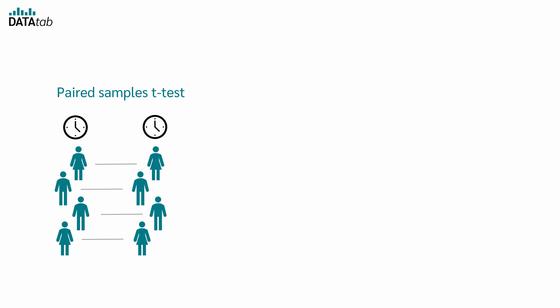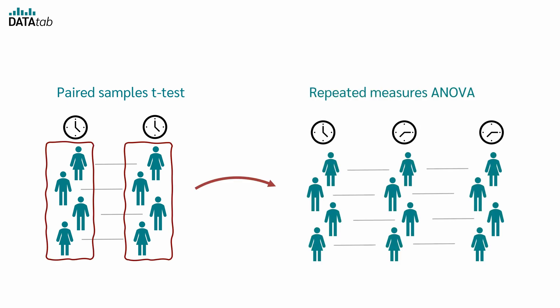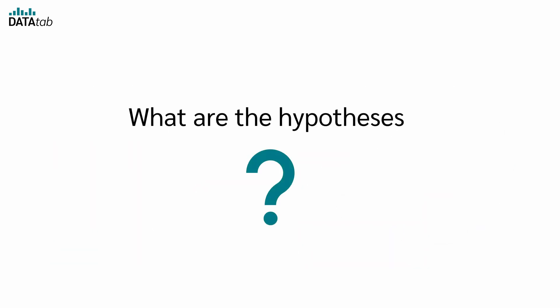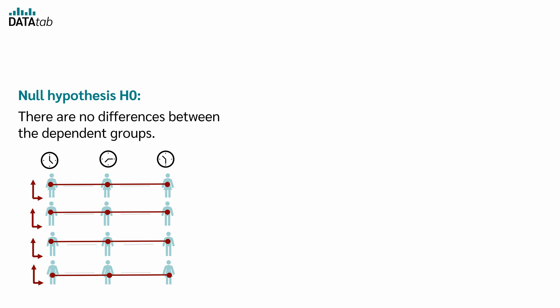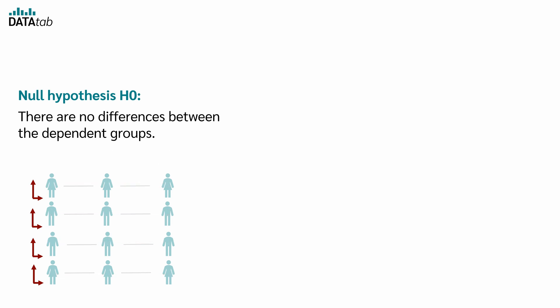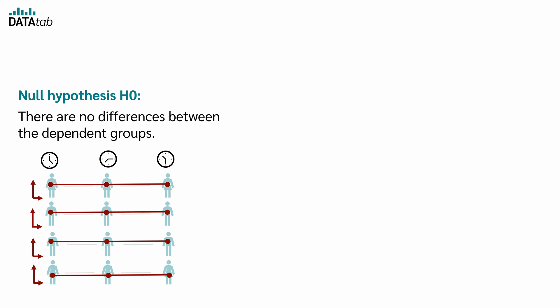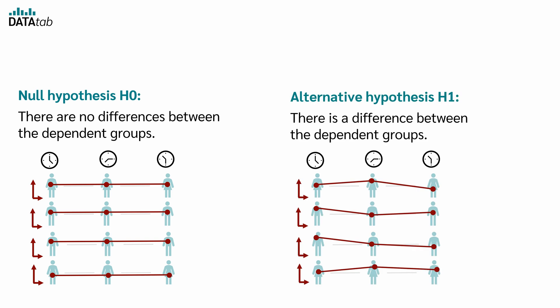But isn't that what the paired samples t-test does? Doesn't it also test whether there is a difference between dependent samples? That's correct. The paired samples t-test evaluates whether there is a difference between two dependent groups. The repeated measures ANOVA extends this concept, allowing you to examine differences among three or more dependent groups. The null hypothesis for a repeated measures ANOVA is that there are no differences between the means of the different conditions or time points — each person has the same value at all times. The alternative hypothesis is that there is a difference between the dependent groups.